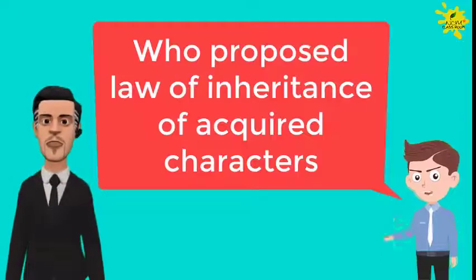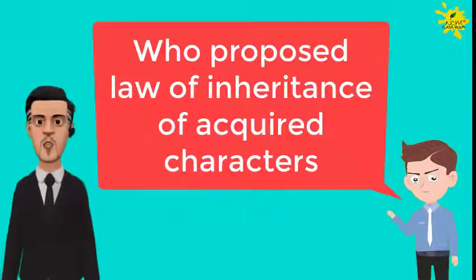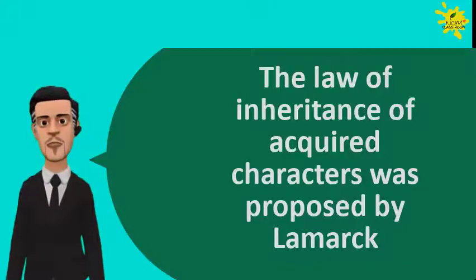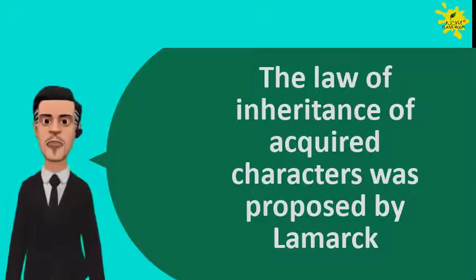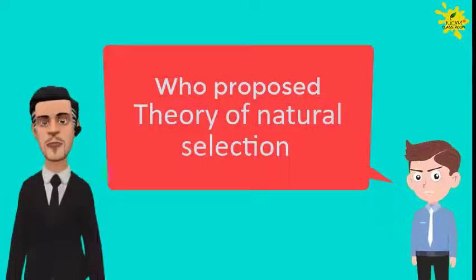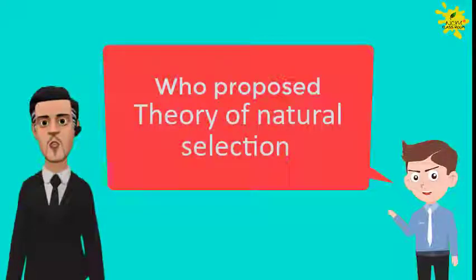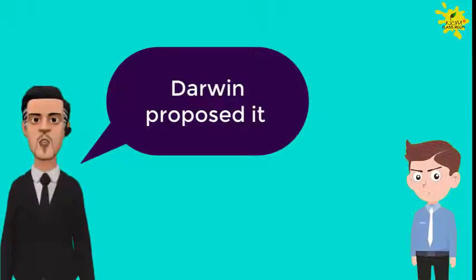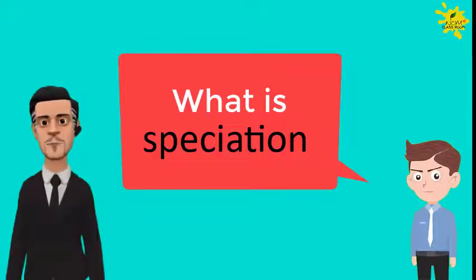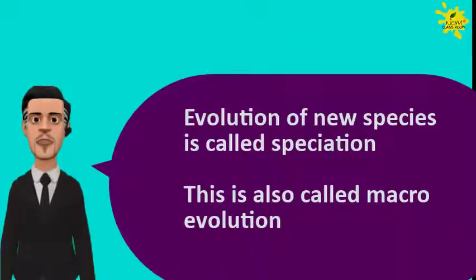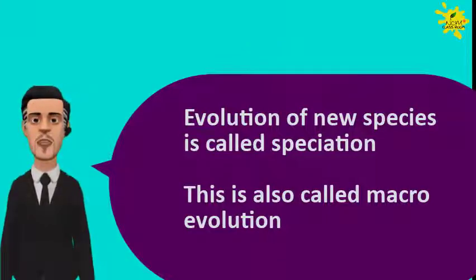Who proposed the law of inheritance of acquired characters? The law of inheritance of acquired characters was proposed by Lamarck. Who proposed the theory of natural selection? Darwin is the scientist who proposed this. What is speciation? Evolution of new species is called speciation. This is also called macro evolution.